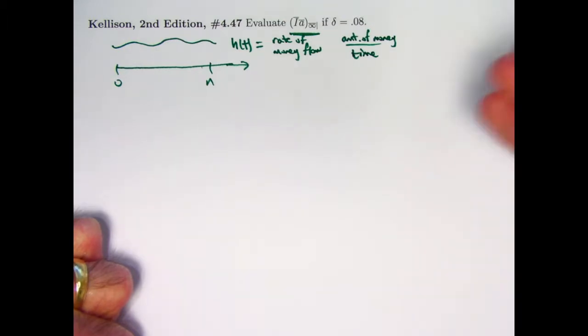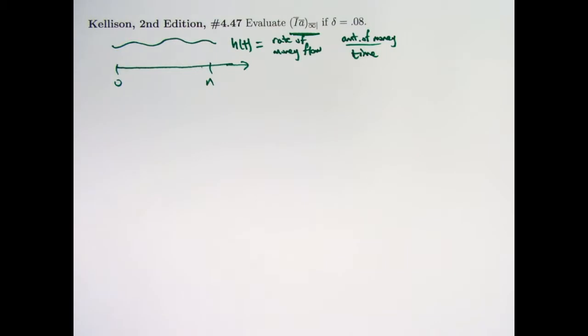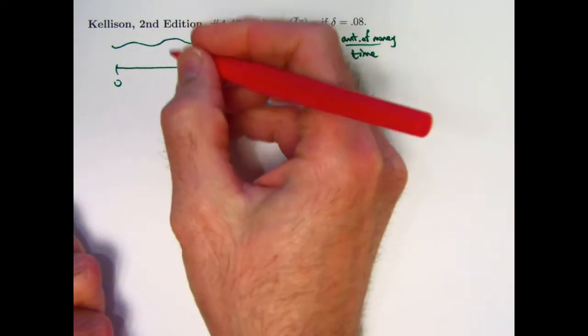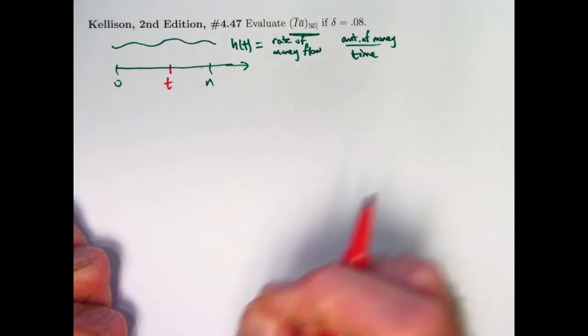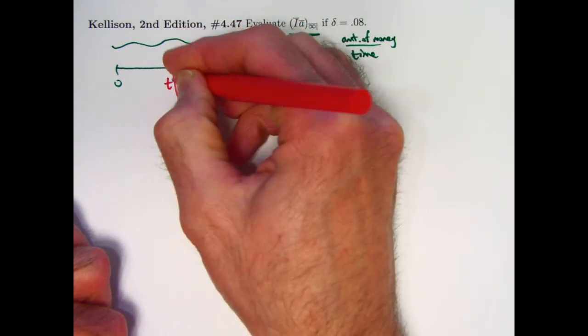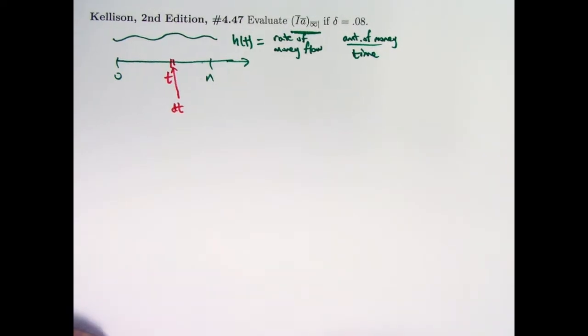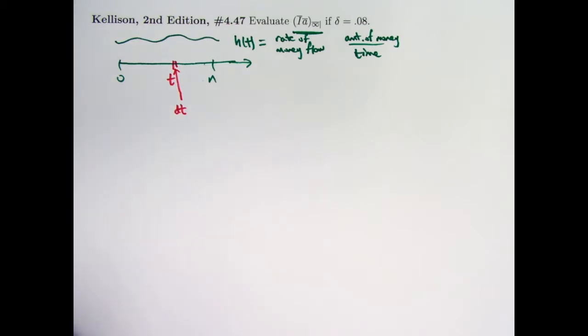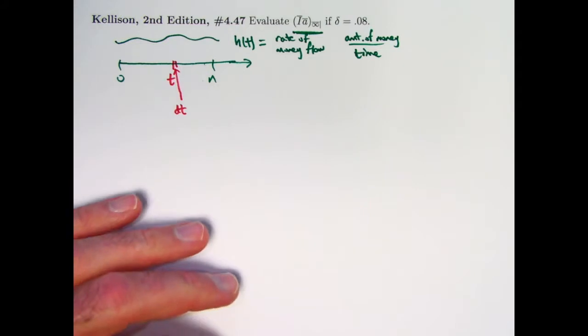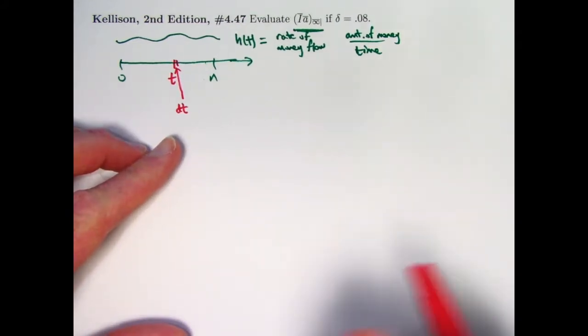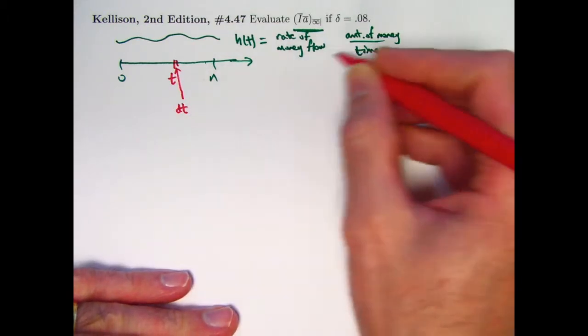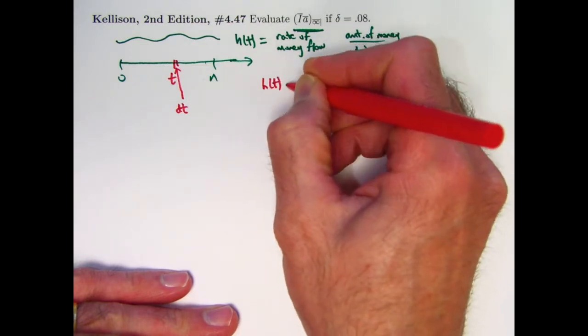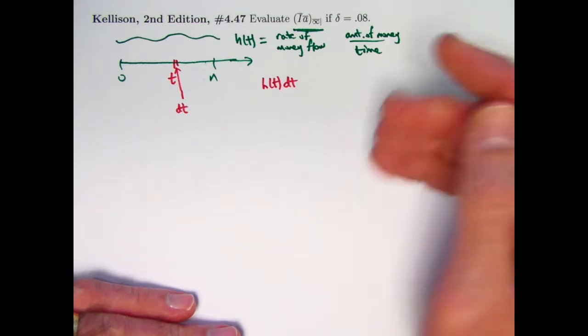So for example, this could be dollars per year or euros per month or yen per day. There are lots of different kinds of things this could represent. Before we think about the time value of money and the present value in such a situation, let's just think about what H of t itself means without thinking about time value of money. Imagine a particular moment in time, t, and imagine an infinitesimally small amount of time goes by. Really, really tiny. Now what is an infinitesimal? Well, in the standard real number system, there is no such thing as an infinitesimally small number. There's something called non-standard analysis where such numbers do exist, but most people only think about ordinary standard real numbers. And the idea of an infinitesimal is just a convenient fiction to help you get to the right answer as quickly as possible. And it does provide some intuition.